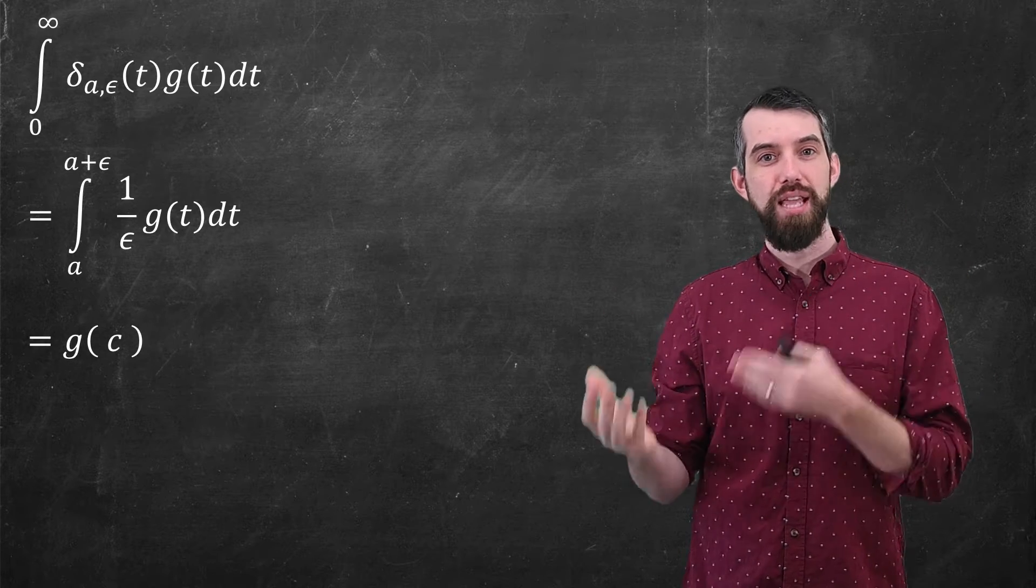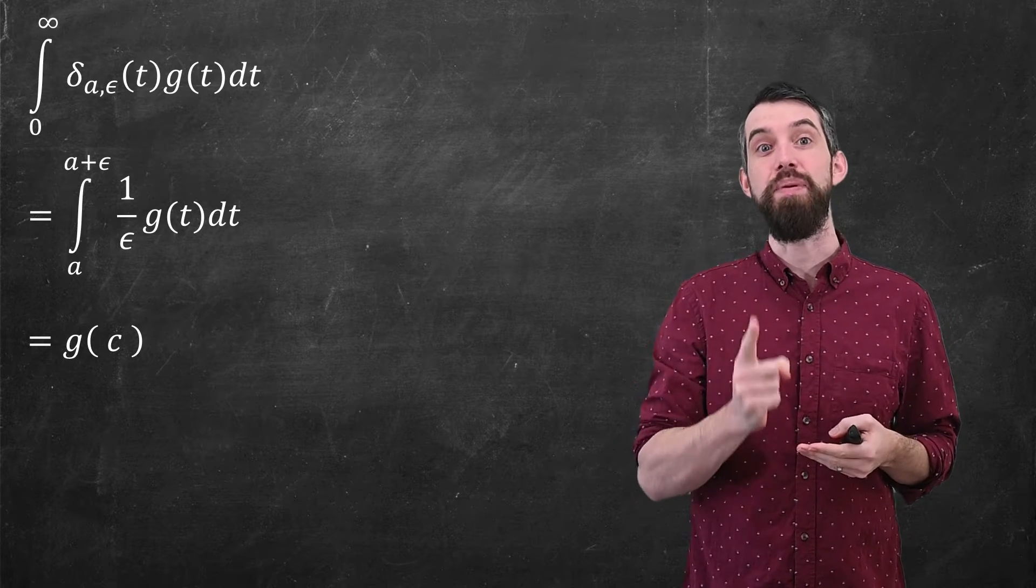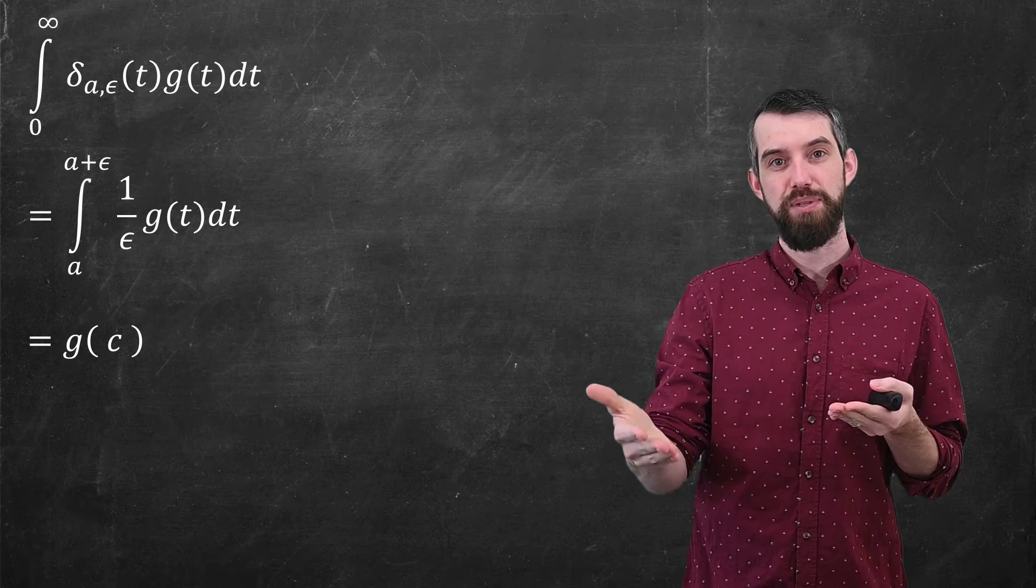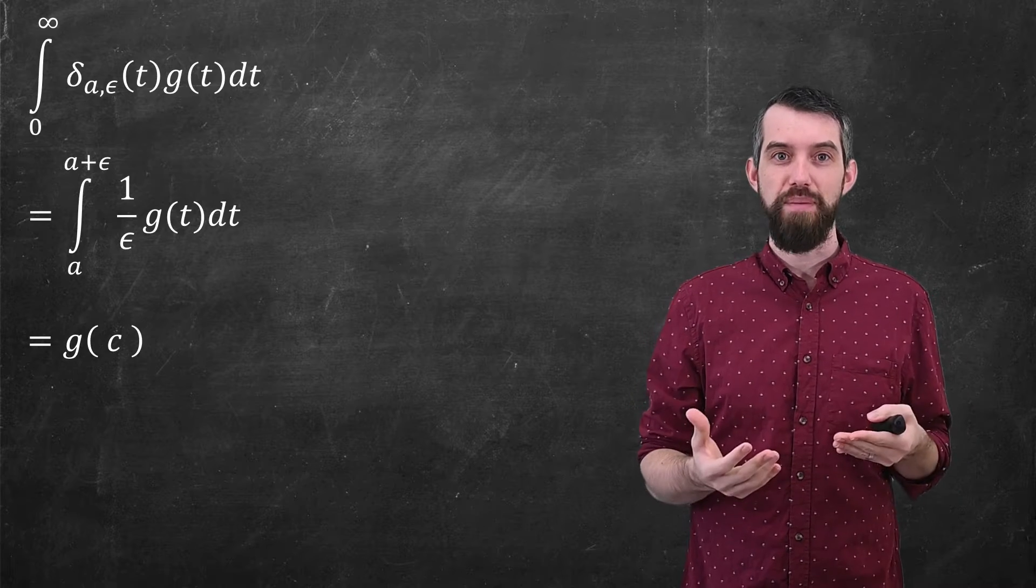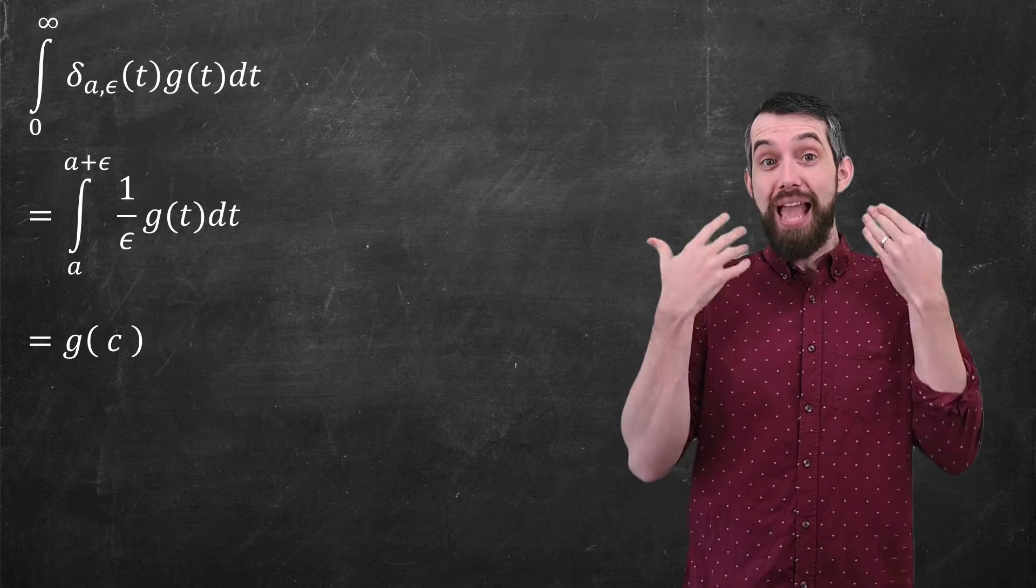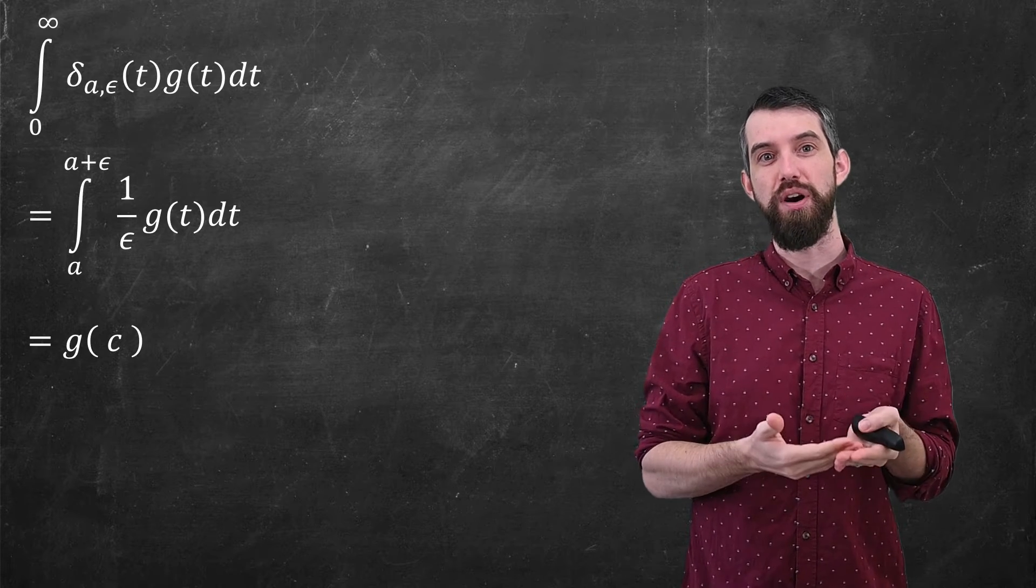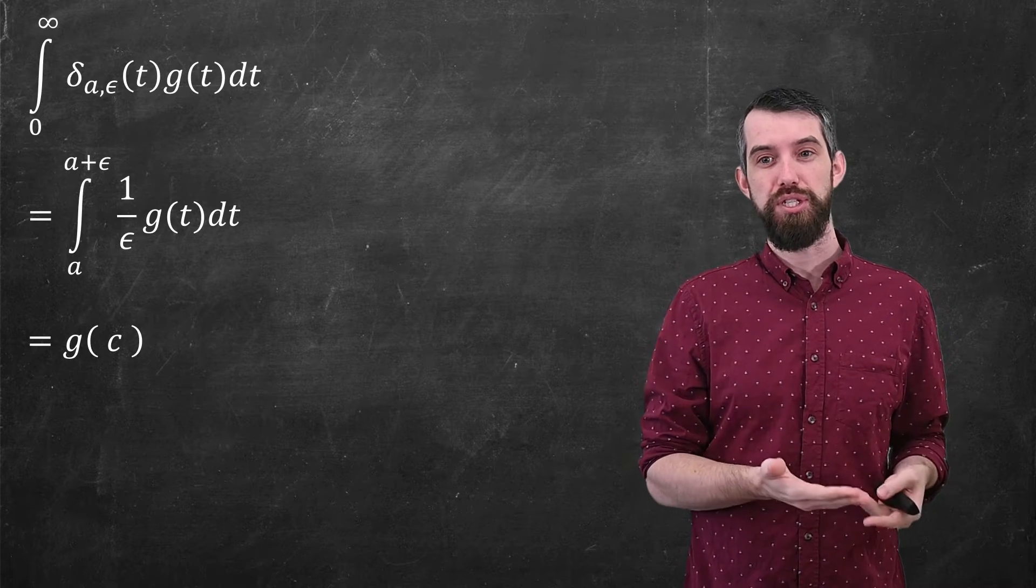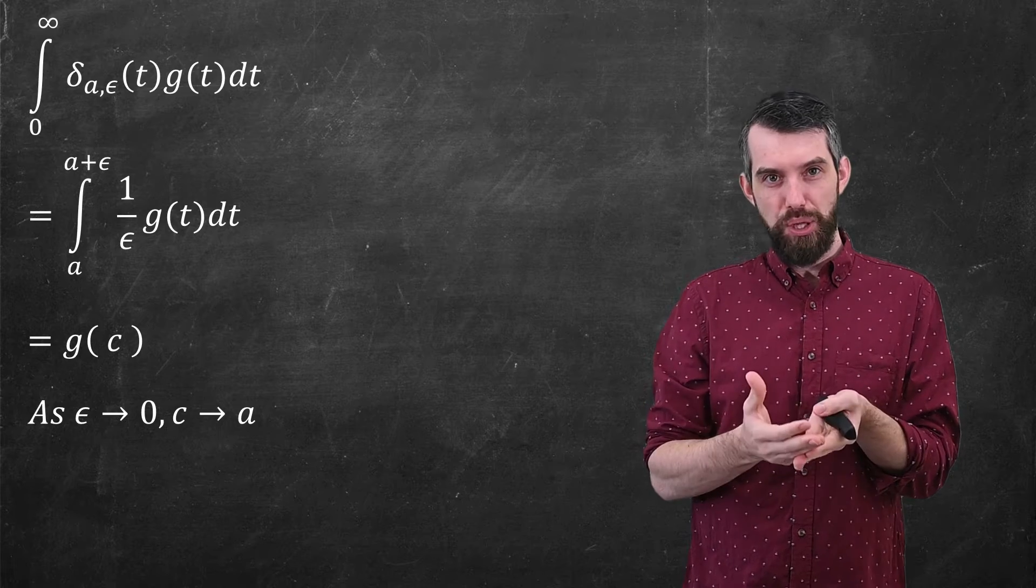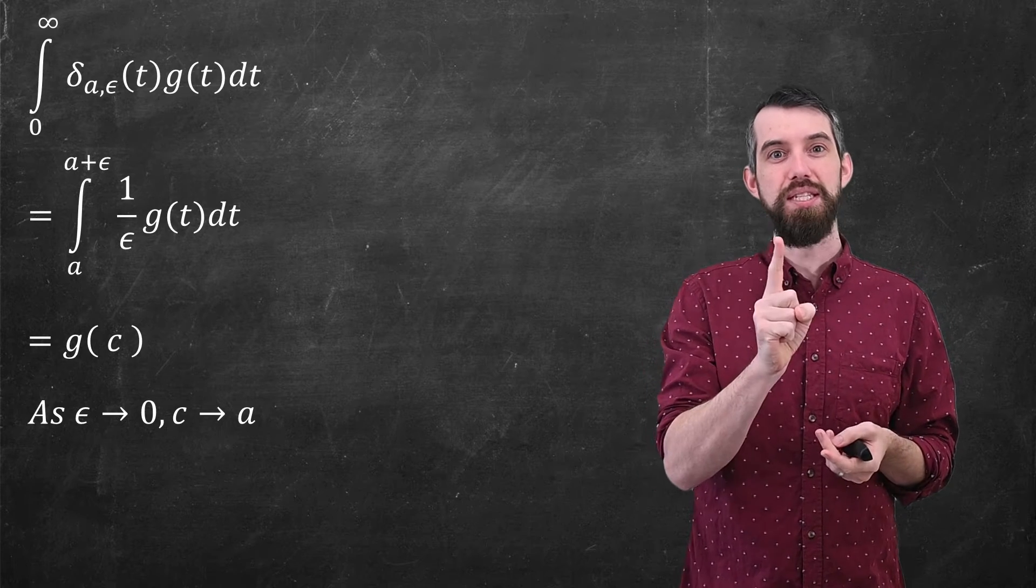It's in the defined interval. The epsilon is just canceling, so I'm just left with g(c). So again, c being some value between a and a plus epsilon. Well, that's all fine, but I want to actually now talk about the actual delta sub a function, or generalized function if you prefer. And so I'm going to take the limit as epsilon goes to 0.